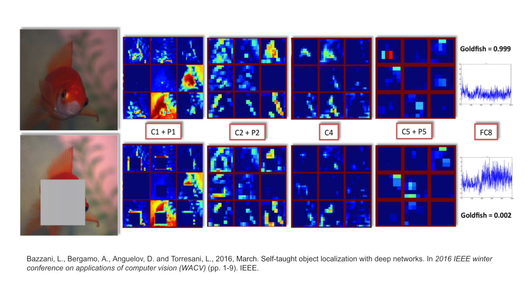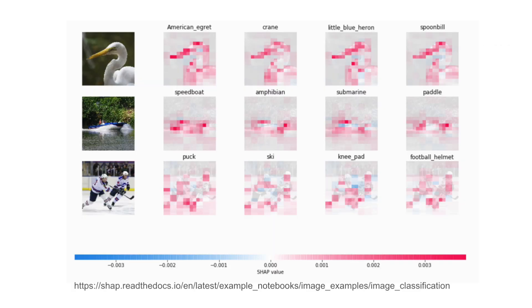In computer vision, permutation is when we rearrange pixels or groups of pixels within an image, and we can do this randomly or systematically. In terms of explainable AI, this is done to understand which parts of the image are most important to predictions, by comparing model performance before and after that part has been permuted. Many XAI methods rely on permutations in some form — for example, occlusion maps work by systematically masking out squares of an image, while SHAP works by permuting different combinations of subsets of pixels. We will discuss both occlusion and SHAP in a later lesson.